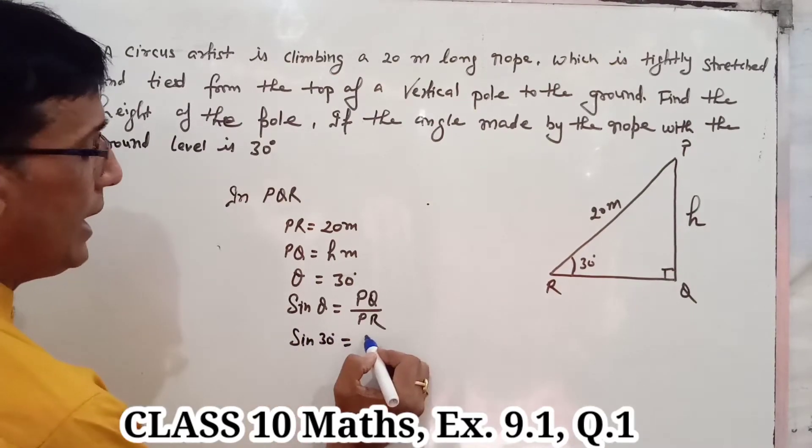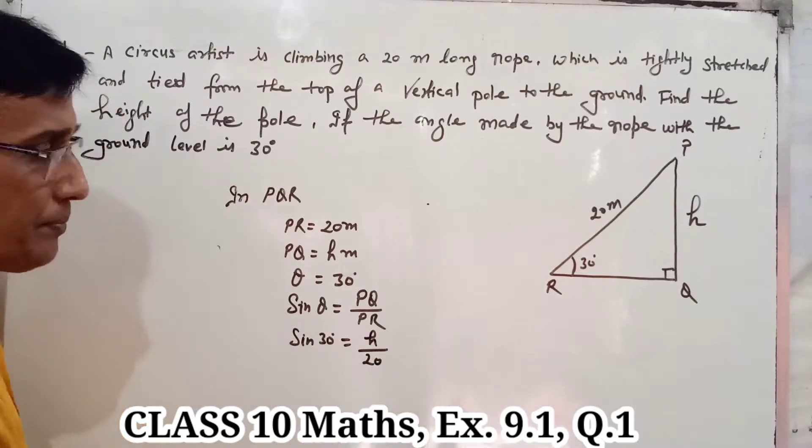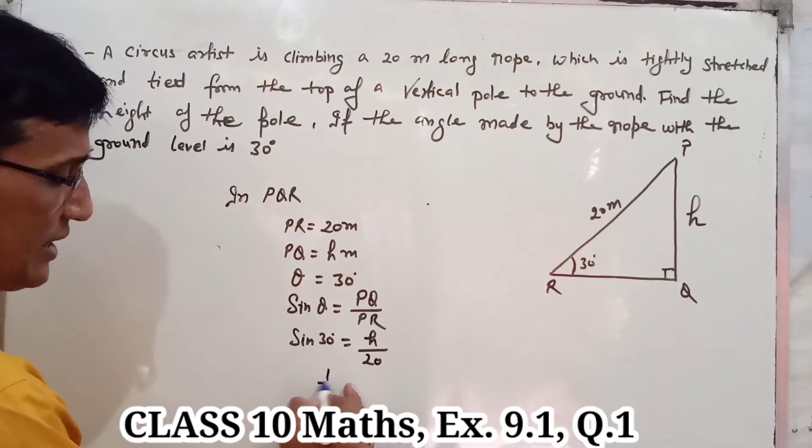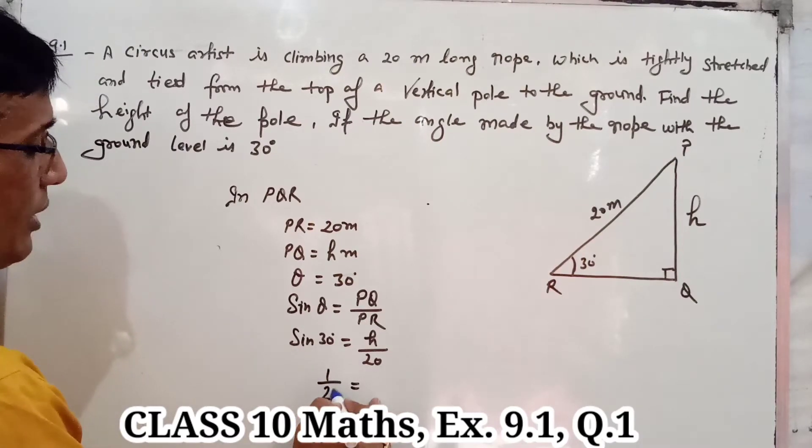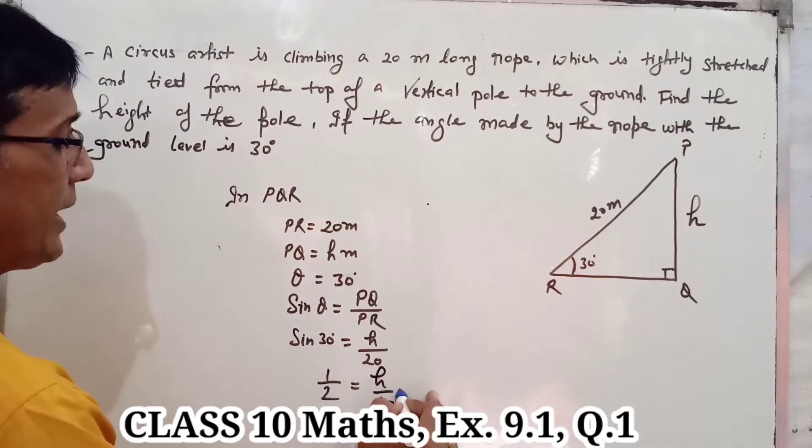PQ is equal to h. PR is equal to 20. Sin 30 degree value is 1 upon 2, and here is h upon 20.